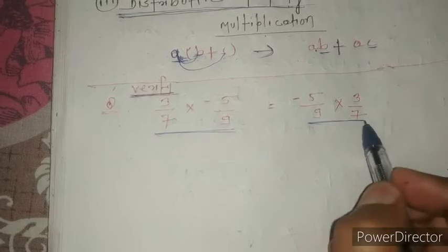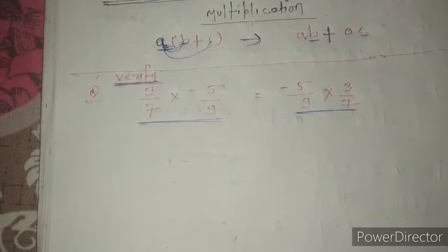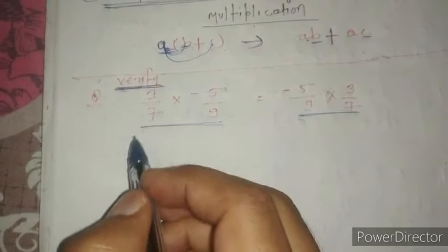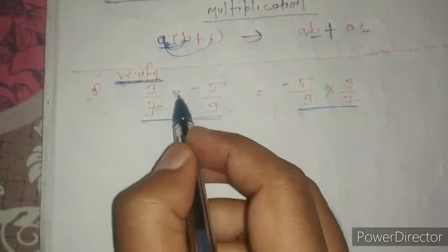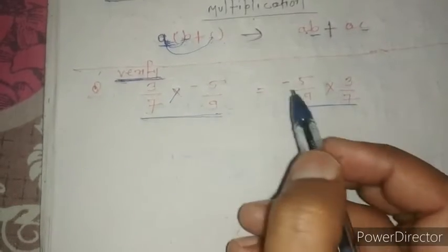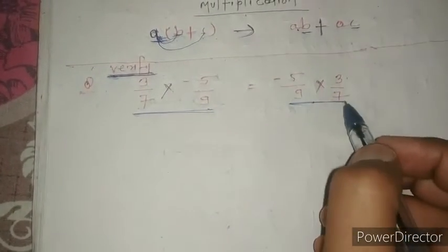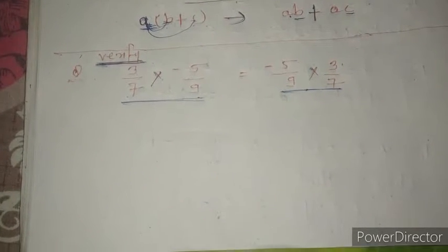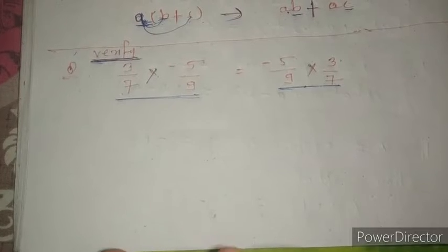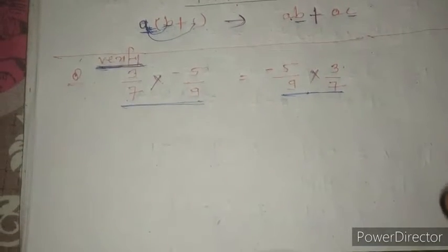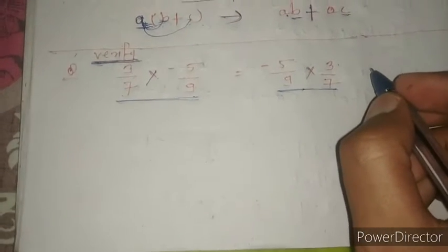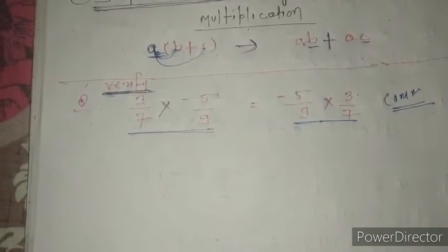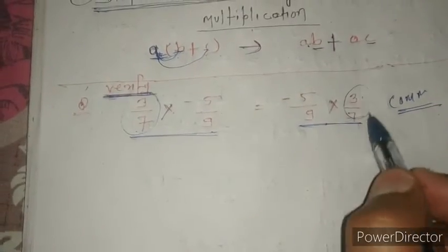On the basis of these properties, we are going to solve these questions. The first question asks to verify: 3 upon 7 into minus 5 upon 9 equals minus 5 upon 9 into 3 upon 7. First tell me which rule this follows. Among the three properties we studied, which property does this follow? Of course, it is commutative property. This follows the rule of a into b equals b into a.